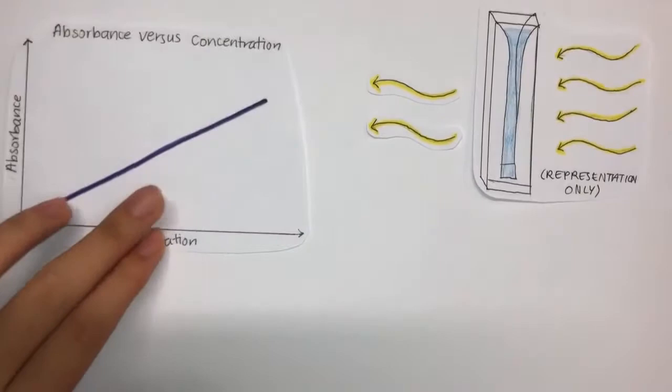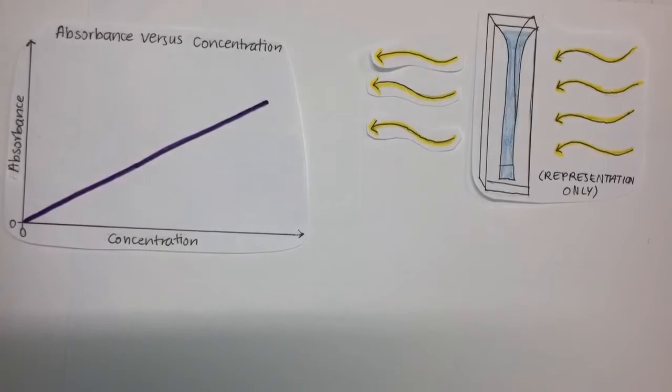When the reaction is complete and there are no more changes in the concentration, the absorbance will also stop changing. By measuring the absorbance at regular intervals to find when it's constant again, we can find the time it takes for our reaction to complete.